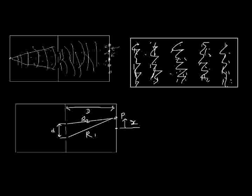We find that we get points of constructive interference where the path difference, R1 and R2, is an integer number of wavelengths. We can look at it like this. We can say that R1 minus R2 is equal to x times d, all over the distance to the screen, big D.